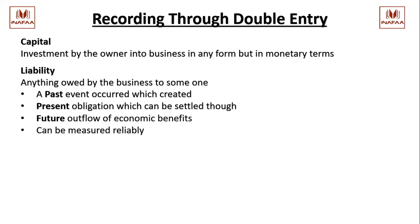There are four parts of this definition - remember: past, present, future, and reliable measurement. To be recorded as a liability, there must be a past event. If there is no past event, there is no liability. For example, if you come and say I have to give you $5,000, I will ask when did I borrow that? You have to show a past event. If there is no past event, there is no liability.